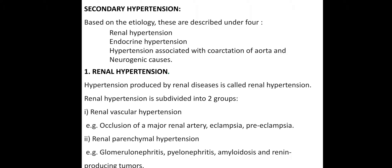Renal parenchymal hypertension includes glomerulonephritis — inflammation of the glomeruli — pyelonephritis, amyloidosis, and renin-producing tumors. These are the examples under the classification of renal hypertension.